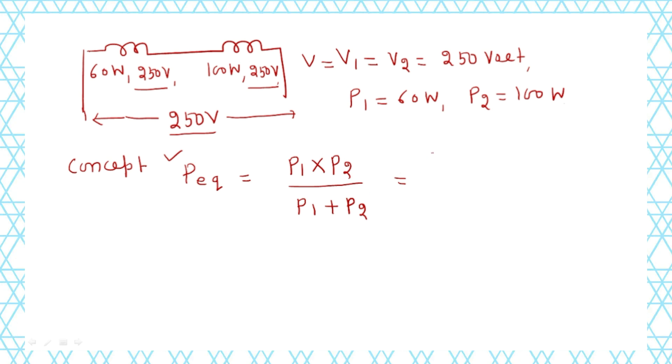So P1 is 60, and P2 is 100, divided by P1 plus P2, which is 60 plus 100. Now solve it: 6000 divided by 160 equals 300 divided by 8, which equals 37.5 watts. So the total power is 37.5 watts.